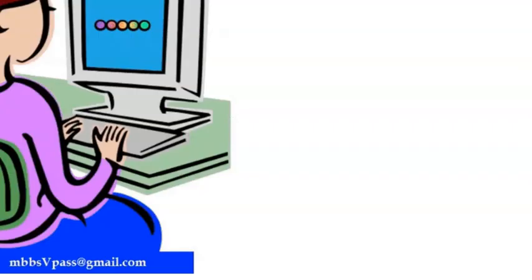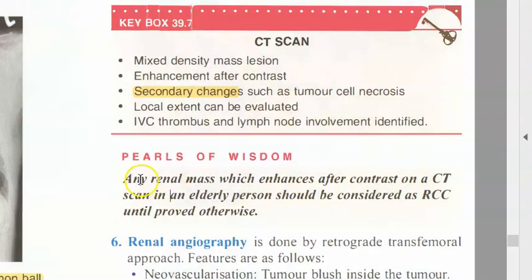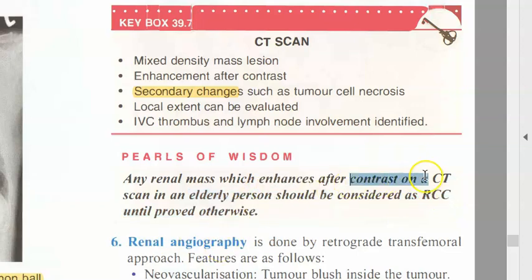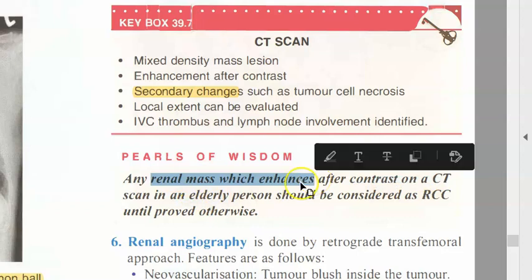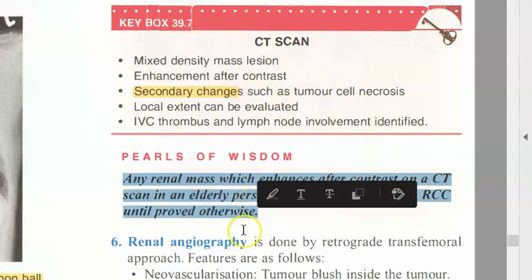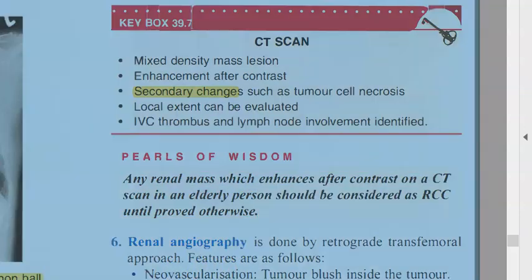In an elderly patient, any renal mass that enhances after contrast on a CT scan should be considered renal cell carcinoma unless proven otherwise. On plain CT it may not be clearly visible, but contrast enhancement strongly suggests renal cell carcinoma.